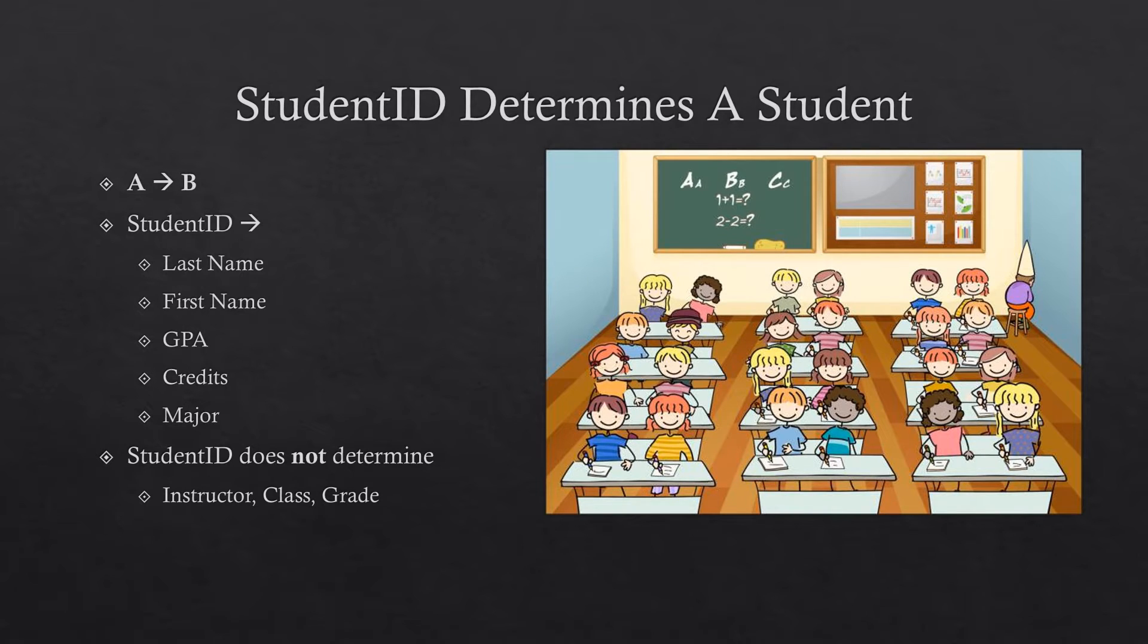So for the student entity, we can say that student ID determines a student. In other words, A determines B, or student ID determines the student's last name, first name, GPA, credits, and major.